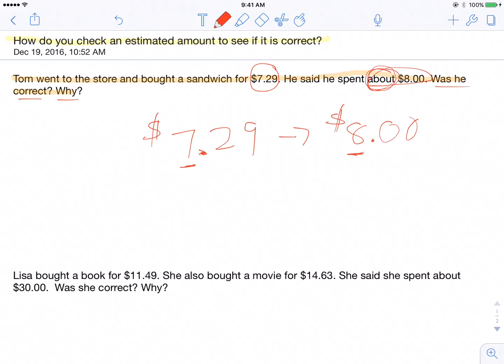So I ask myself, $7.29. That's between $7 and $8 on a number line. I know halfway between $7 and $8 is $7.50. Since he had $7.29, he has less than $7.50, which means $7.29 rounds to $7. So it turns out Tom was incorrect.